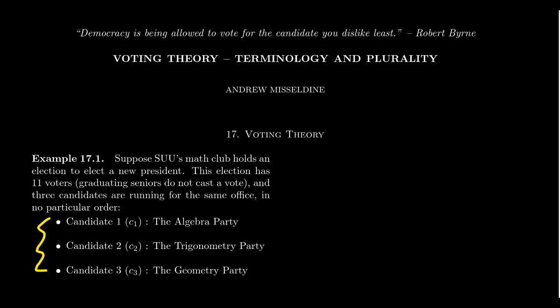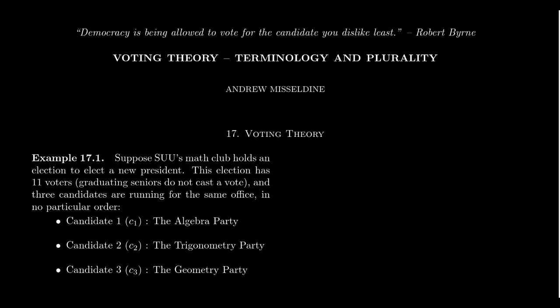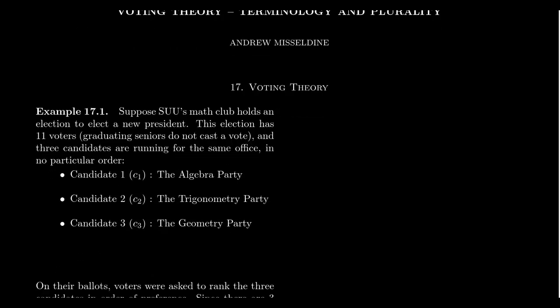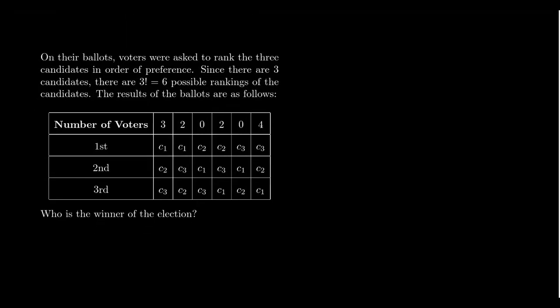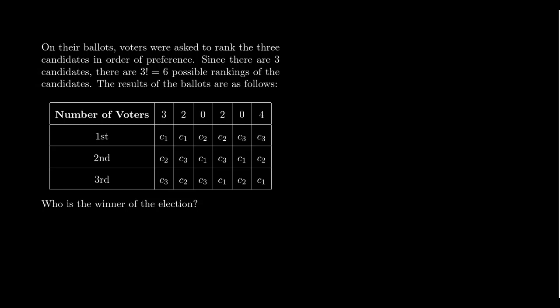In this particular year, three candidates ran for the Math Club presidency. Since this is Math Club, their political parties are the Algebra Party, the Trigonometry Party, and the Geometry Party. Full disclosure: I'm a registered member of the Algebra Party. In the Math Club, we do things a little differently — when we cast our ballots, we don't just vote for our first choice; we actually rank all candidates in order of preference: first place, second place, third place.